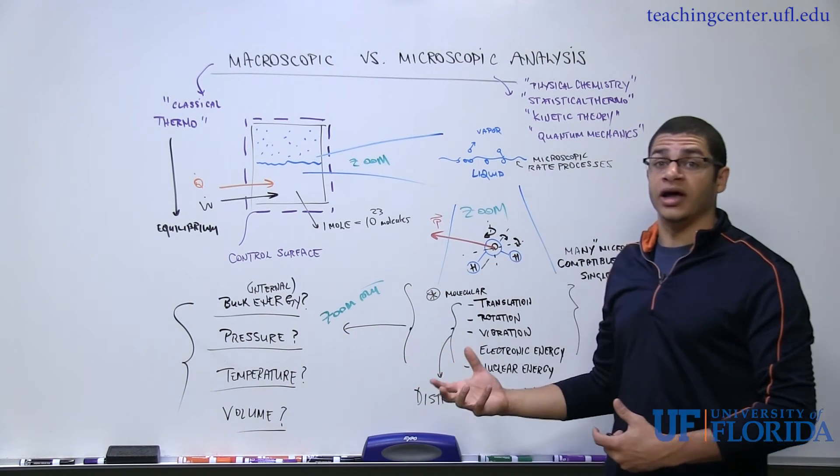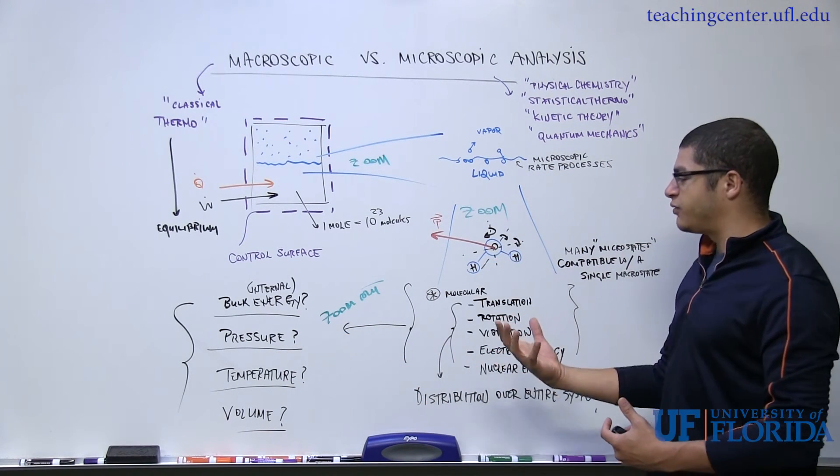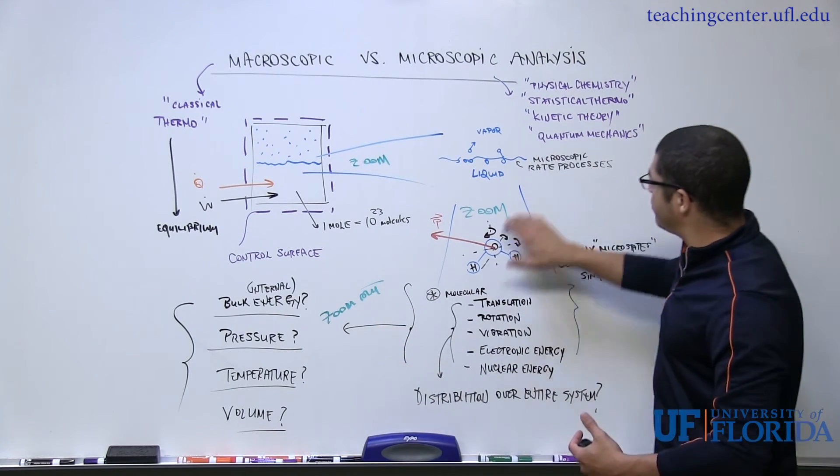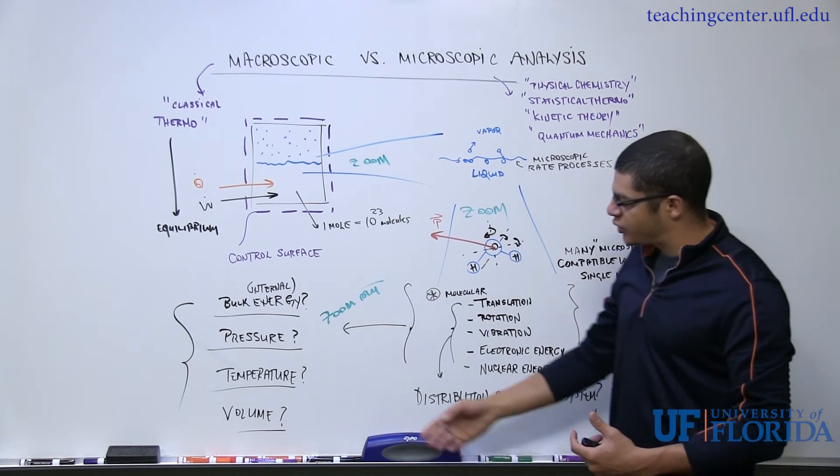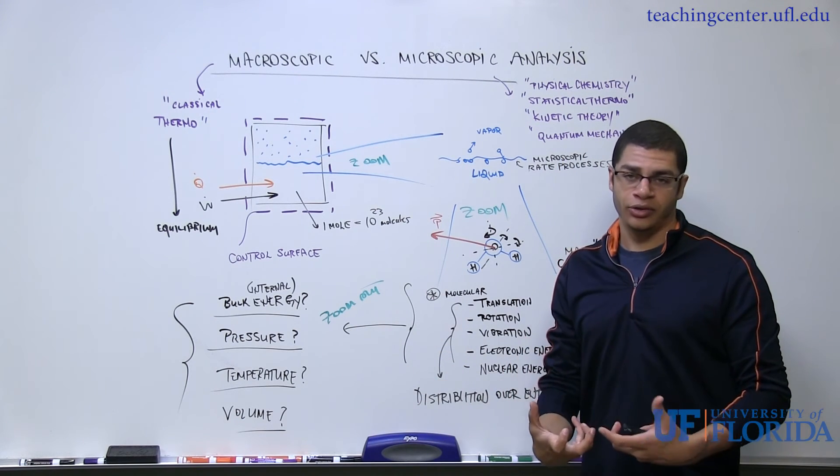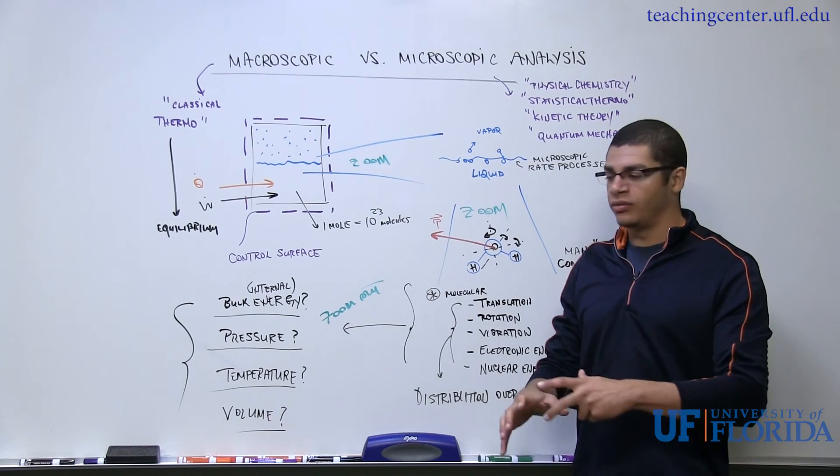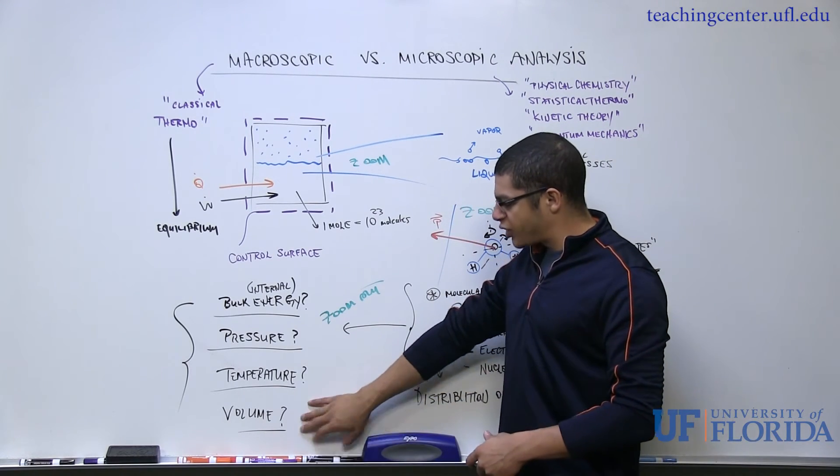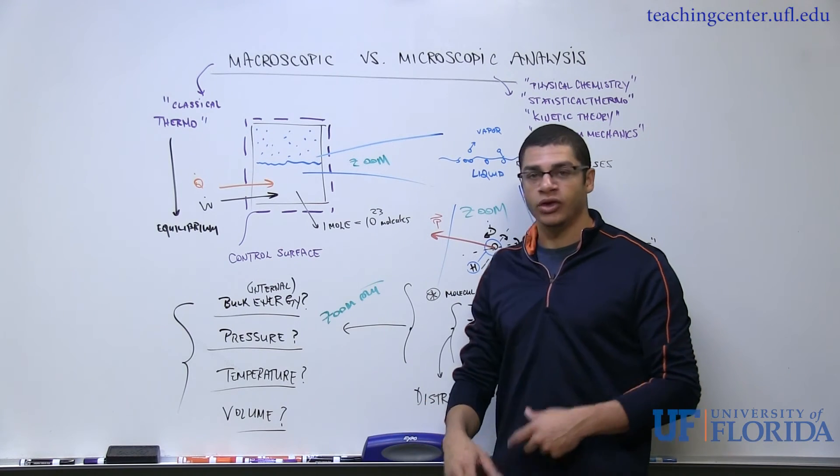If that force is normalized by some kind of area, then you come up with a pressure. Temperature from the same kinetic theory subject is also quantified as nothing more than the kinetic energy, the average kinetic energy of the molecules within our system.